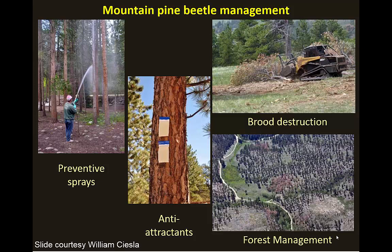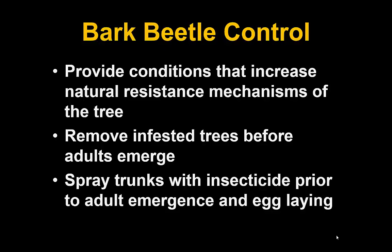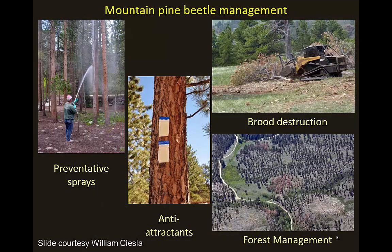Mountain pine beetle management involves a couple of different approaches. We can use insecticides in a preventive manner, and there are some novel uses of pheromones in an anti-attractant strategy to push beetles off trees, but a lot of it has to do with forest management. Bark beetle control typically involves providing conditions that increase the tree's natural resistance, removing infested trees before adults emerge, and spraying trunks with insecticide prior to when adults emerge and lay eggs. Preventive sprays are applied before adults come in — usually in June, ahead of July emergence.